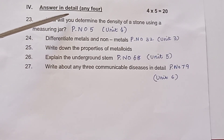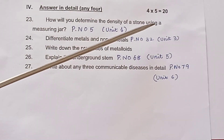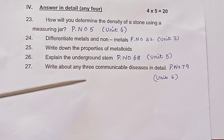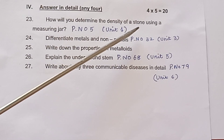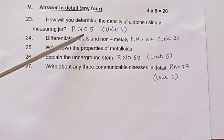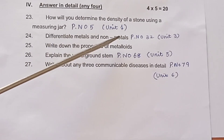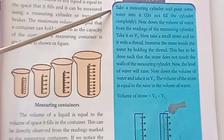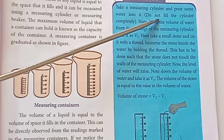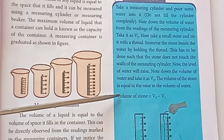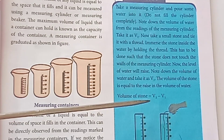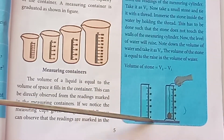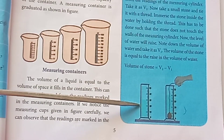Section 4: Answer in detail. Any 4 questions, 5 marks each, equal to 20 marks. Question 23: How will you determine the density of a stone using a measuring jar? Page number 5, Unit 1. Answer: Take a measuring cylinder and record the initial water level V1. Add the stone and note the new water level V2. The volume of the stone is V2 minus V1. Draw a diagram to illustrate the procedure.